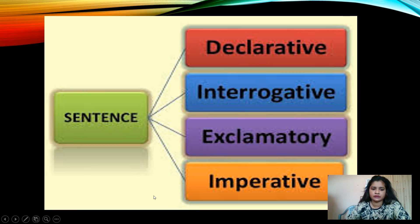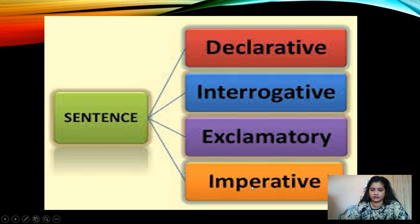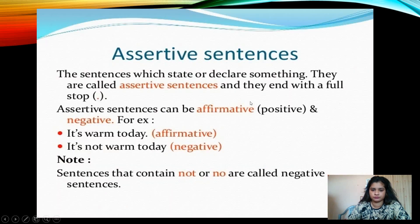Children, there are four kinds of sentences: declarative, which is also known as assertive sentence; interrogative sentence; exclamatory sentence; and imperative sentence. Let's see all these sentences one by one.